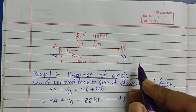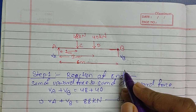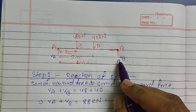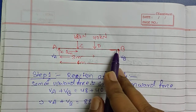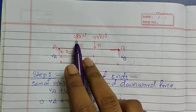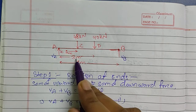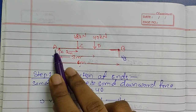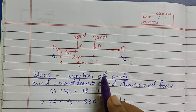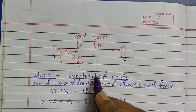Hello everyone, welcome to my YouTube channel Civil Learning. Today in this video I will be discussing Macaulay's method, which is also known as the double integration method. For this I have selected a simply supported beam of span 6 meters, carrying two point loads of 48 kilonewton and 40 kilonewton at distances of 1 meter and 3 meters from end A respectively. You will find a step-by-step solution, so let's begin.